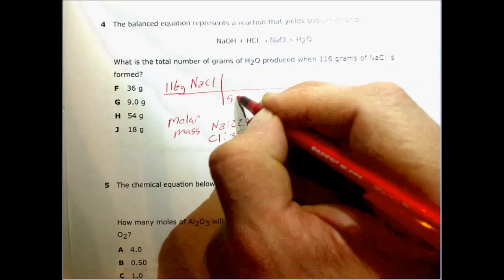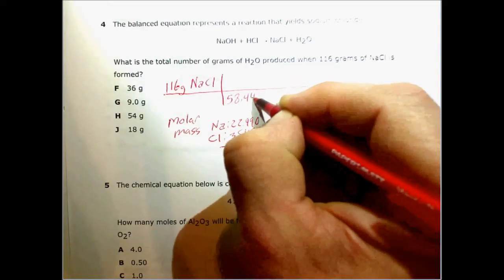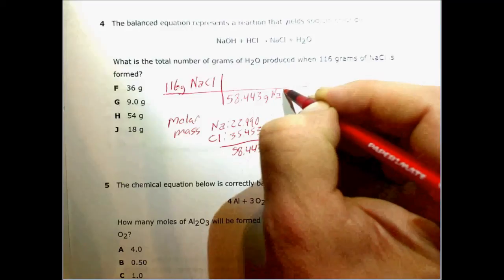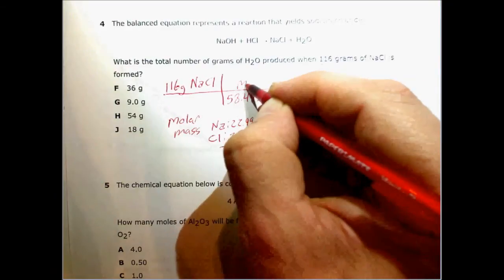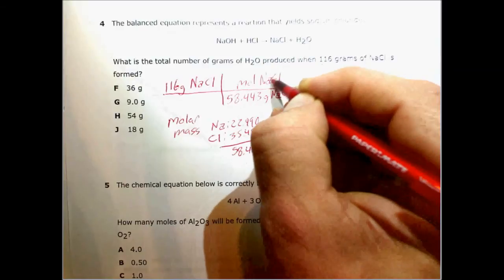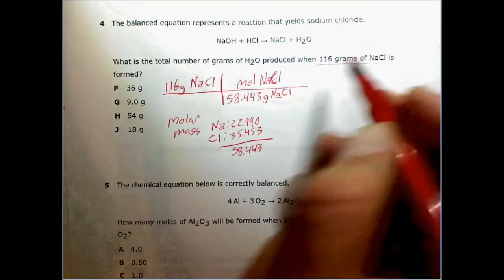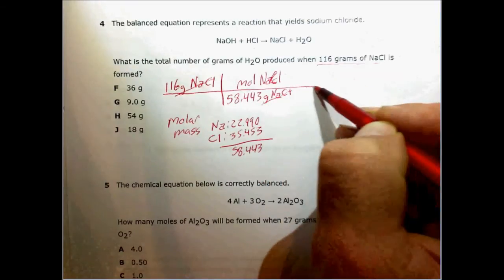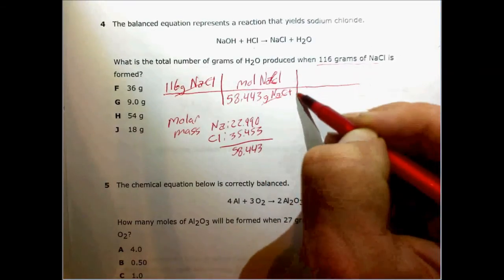So I put that in here, 58.443. And the units are grams of NaCl per mole of NaCl. That's a big C. And these units cancel. So now I'm in moles of NaCl.